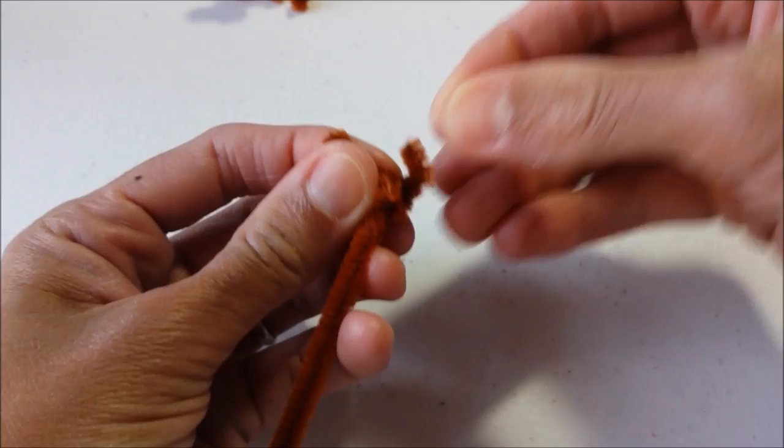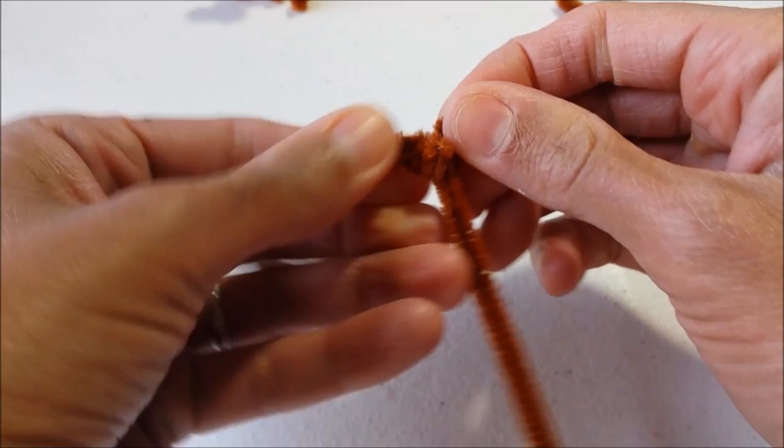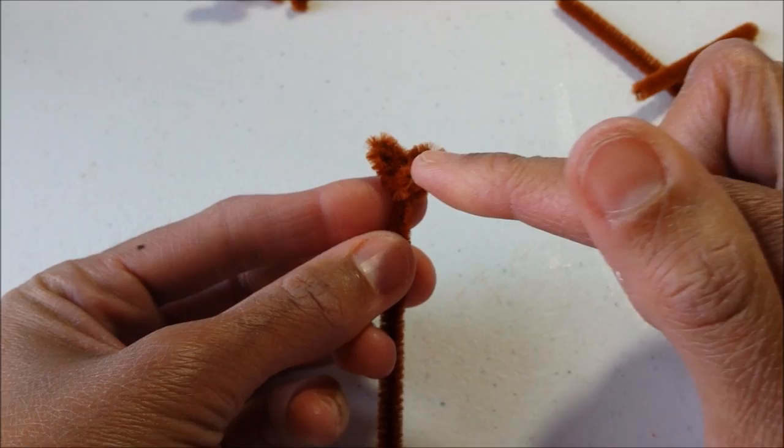Fold in your ears and if you feel like they're still too big you can unfold them, trim them and of course fold them back in. So this is our tiny little bear head, ears and nose.